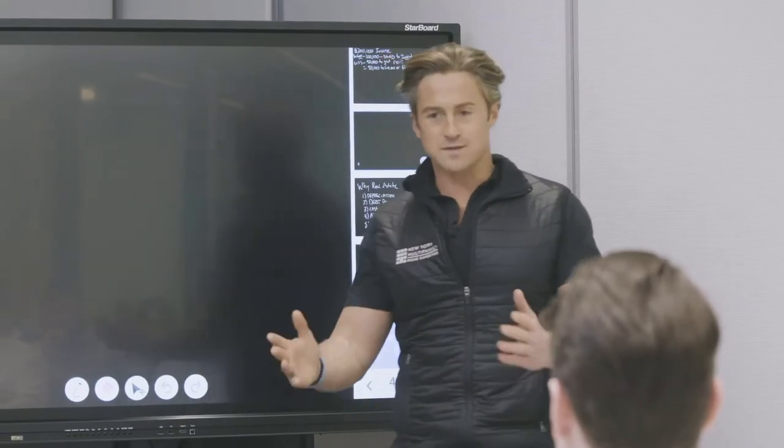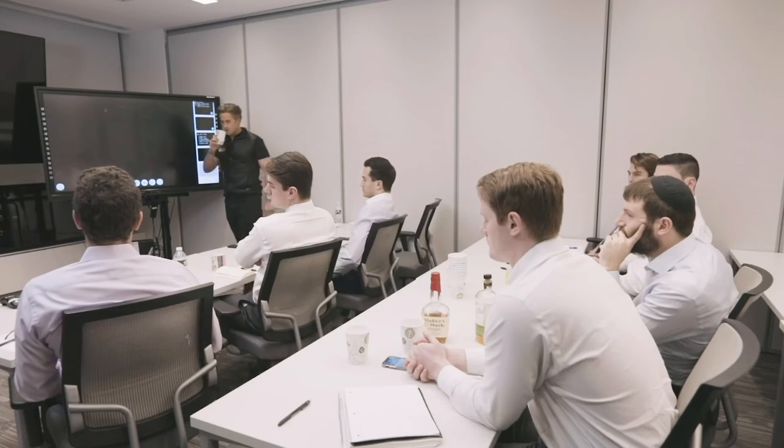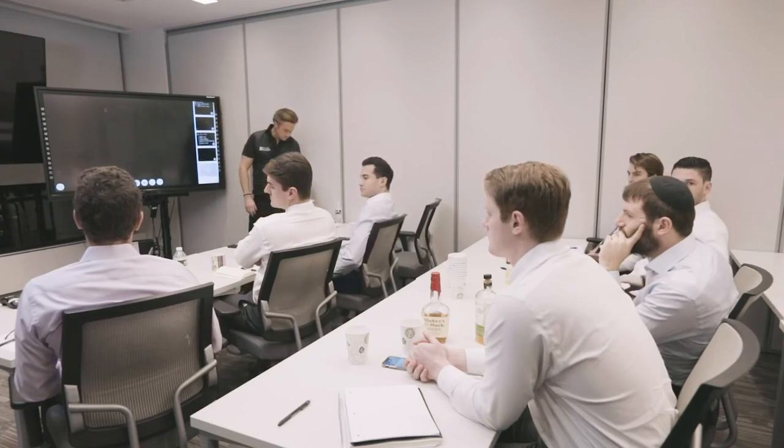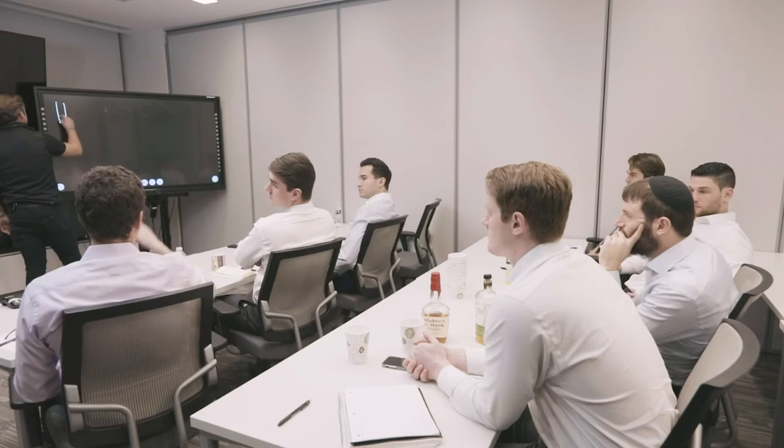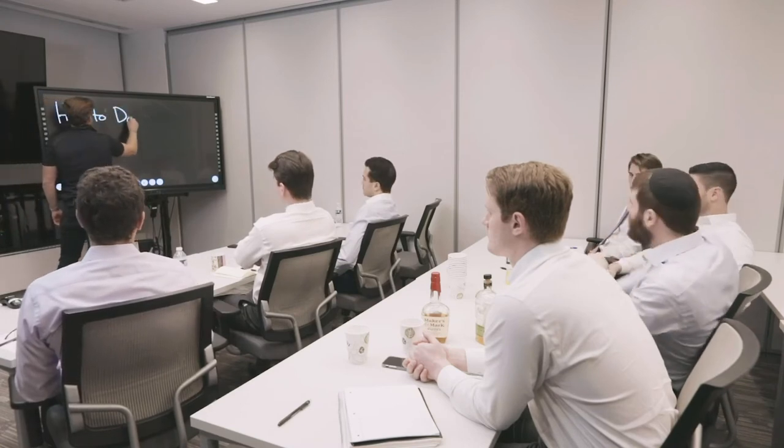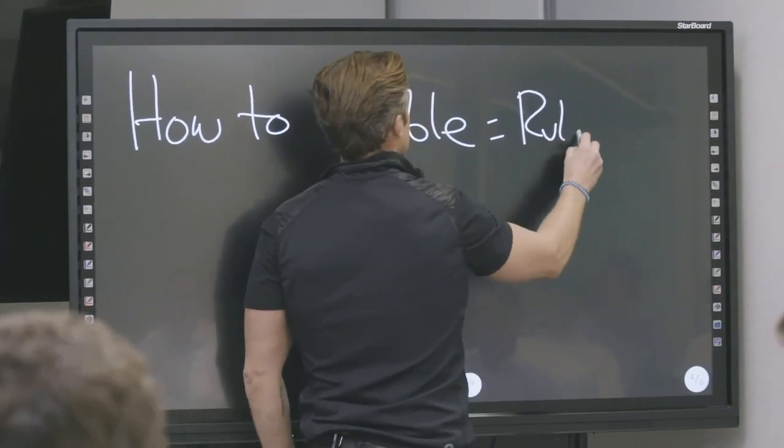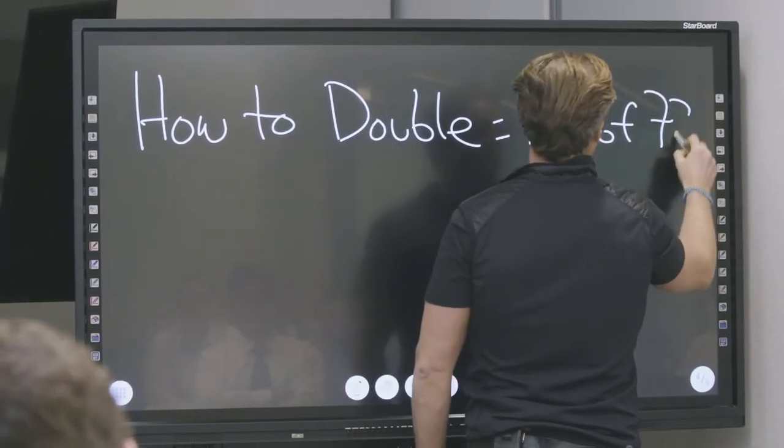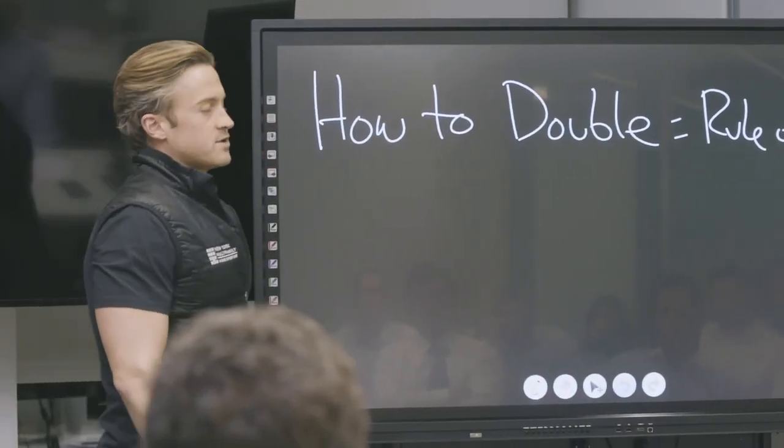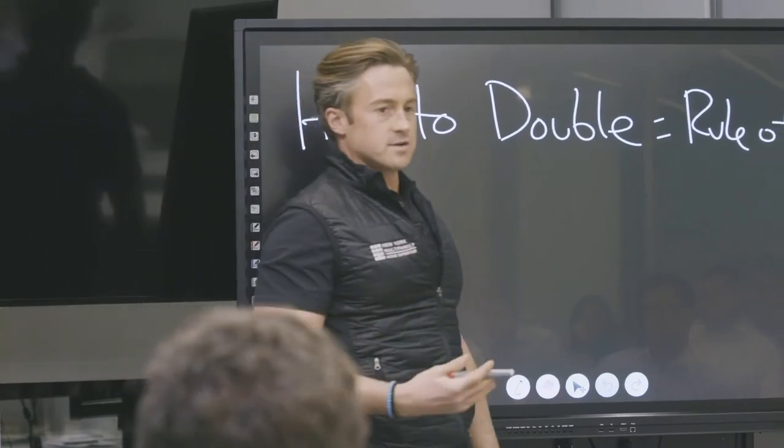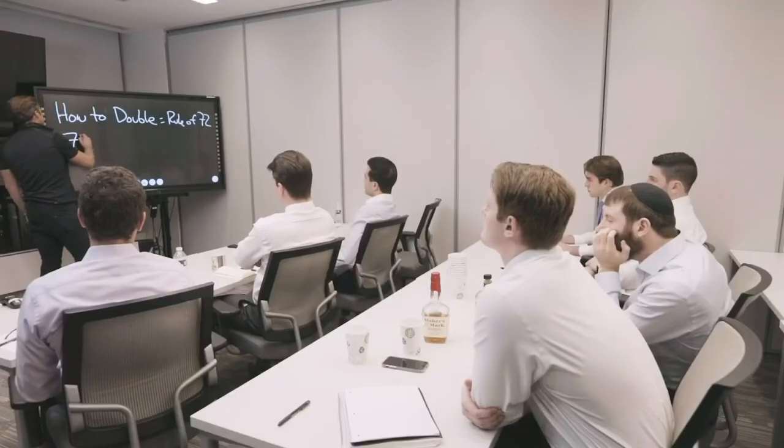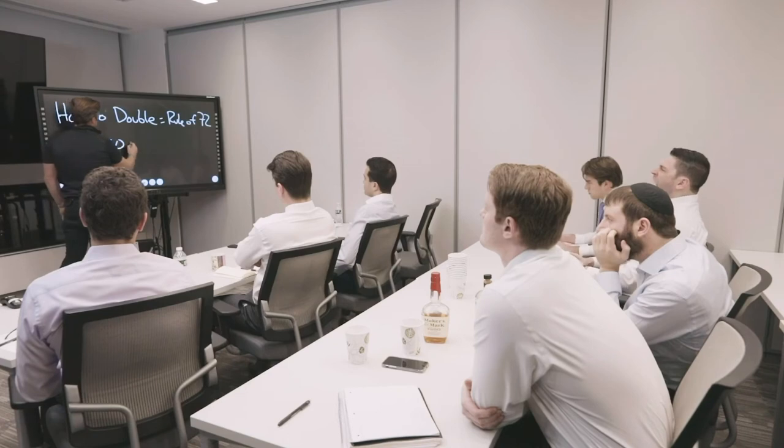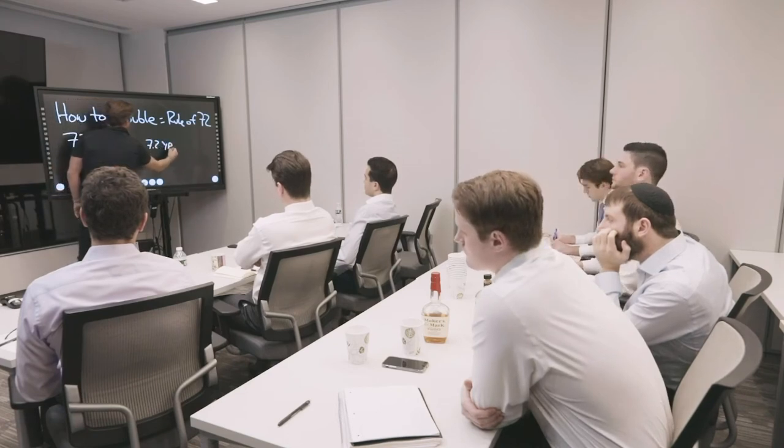What's the rule of 72? How to double. Rule of 72. What this means is if you divide 72 by whatever rate of return you're expecting out of your investments, it'll give you how many years it's going to take you to double your investment. So 72 divided by a 10% return, it's going to take you 7.2 years.